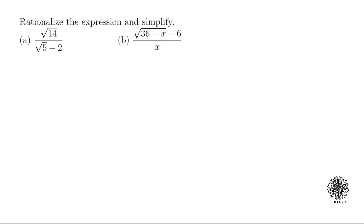For part A, to rationalize the expression I'm going to multiply by what we call the conjugate. The conjugate would be the square root of 5 plus 2 instead of square root of 5 minus 2. I'll multiply both the numerator and denominator by the same expression, which means I'm multiplying by 1, so I'm not really changing anything — it just changes the way it looks.